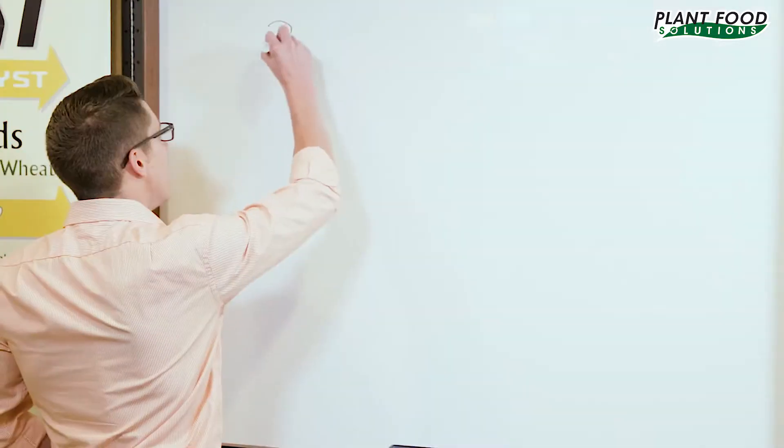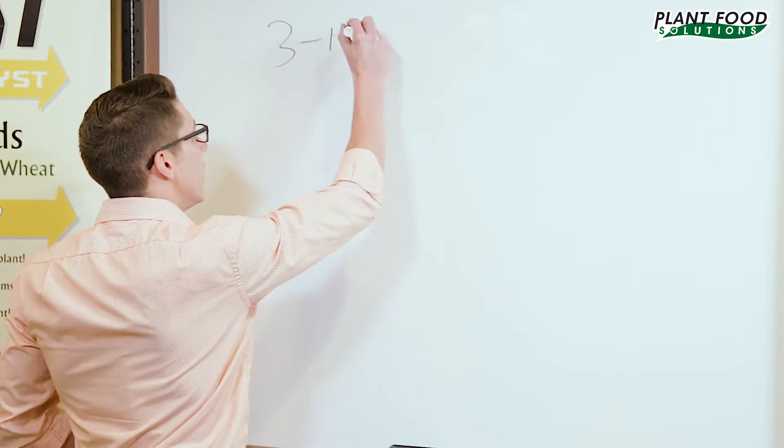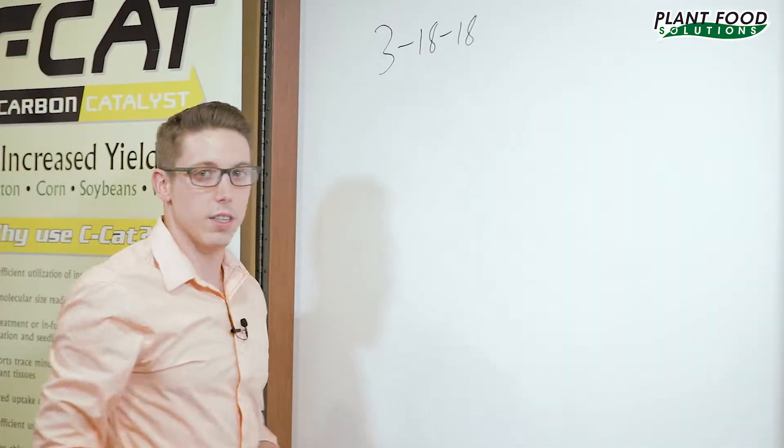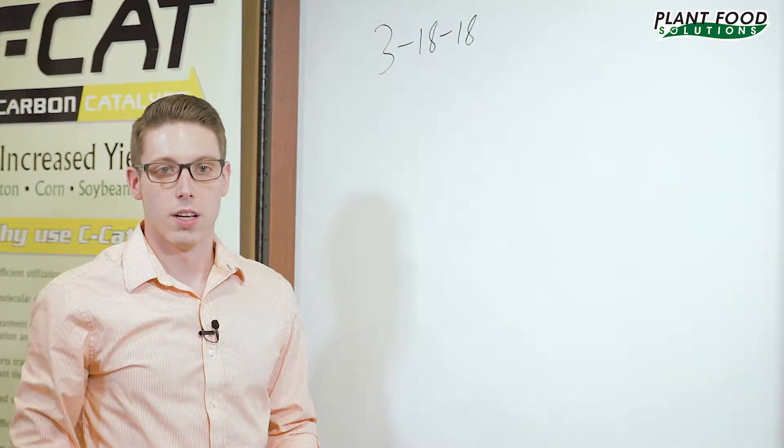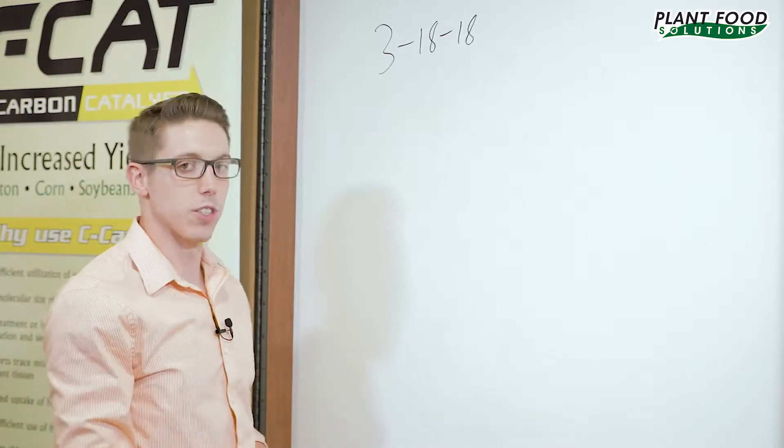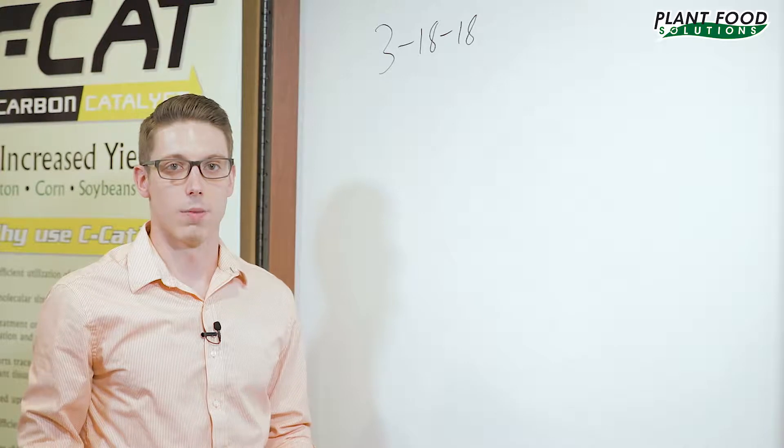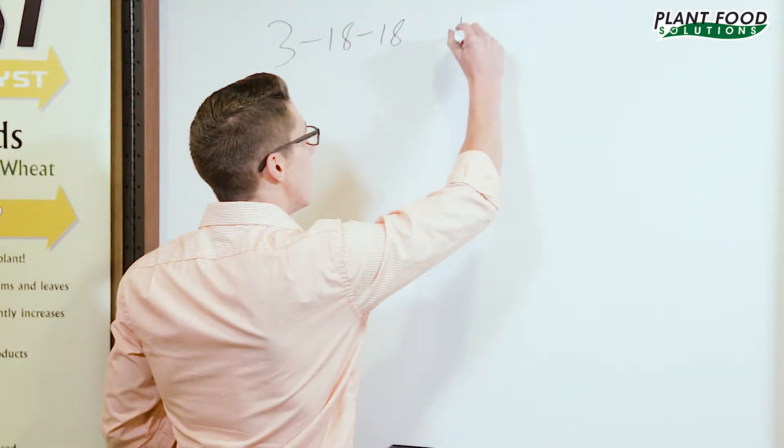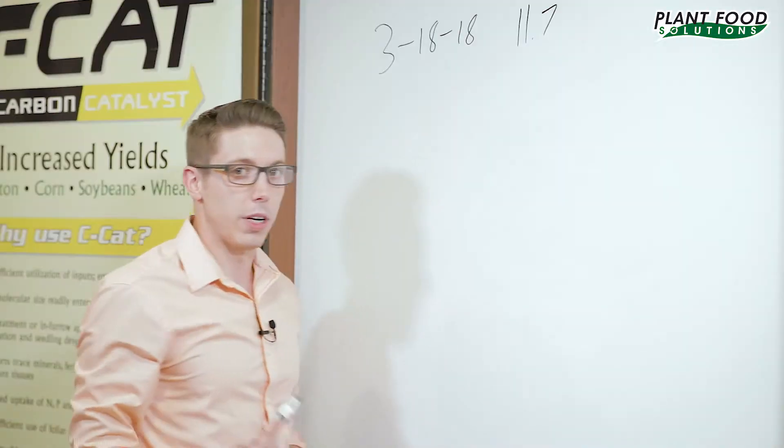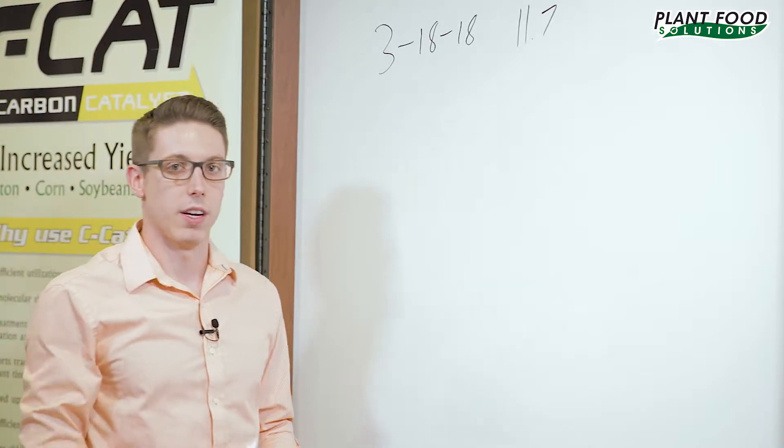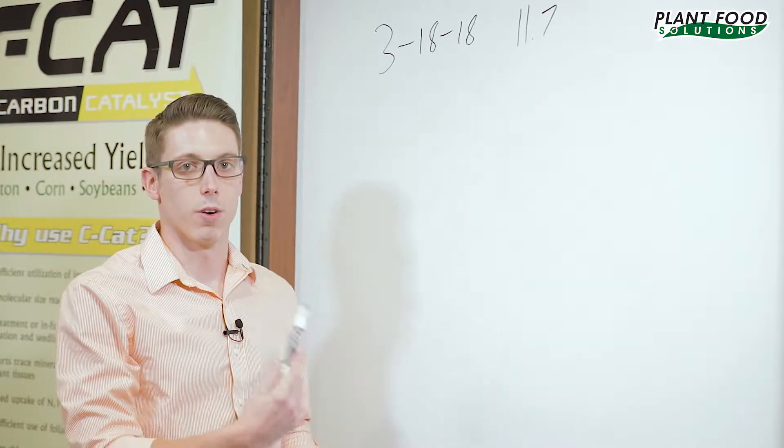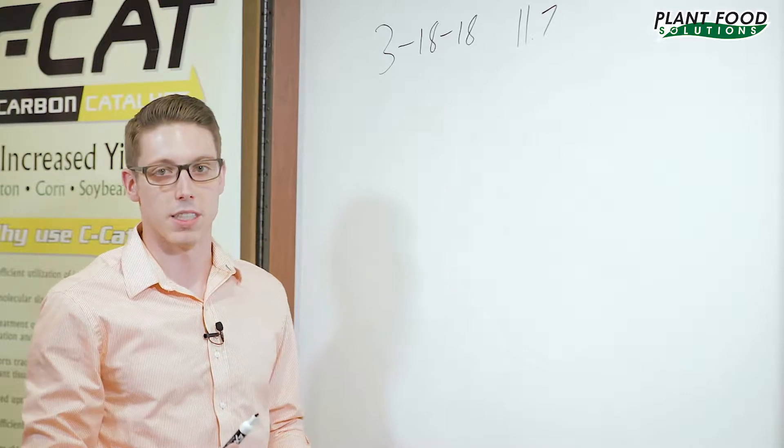I'm going to start with our most common analysis 3-18-18 and we'll go from there. So you're going to want to take the weight of these analysis to determine how much you have in there. So 3-18-18 weighs 11.7 pounds to the gallon. 3% of that 11.7 is nitrogen, 18% phosphorus, and 18% potassium.